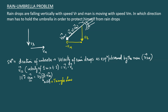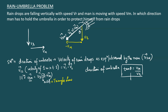To specify the direction of the umbrella, find the angle with respect to the vertical. Applying trigonometry, tan θ = opposite over adjacent = vm over vr, where θ is measured with respect to the vertical. So the man tilts the umbrella forward at angle θ = arctan(vm / vr) from the vertical.